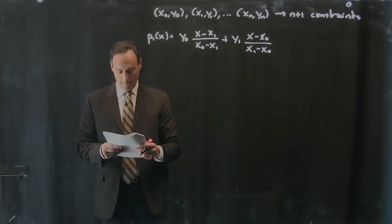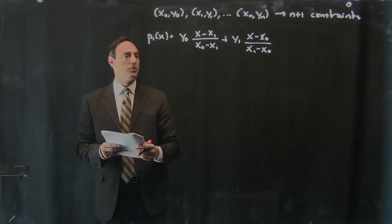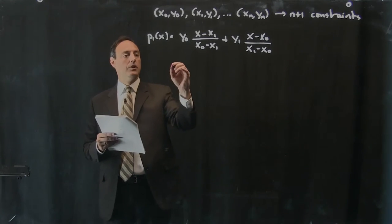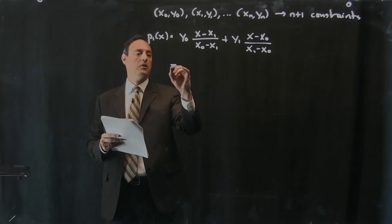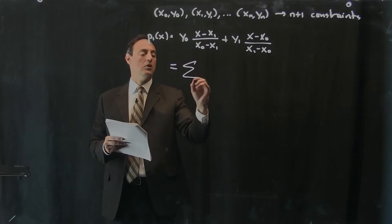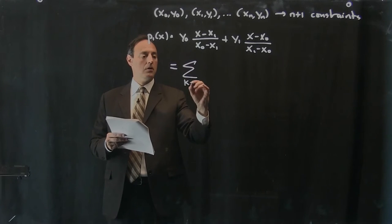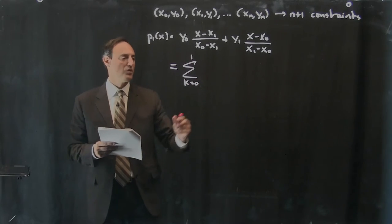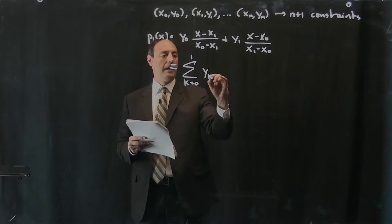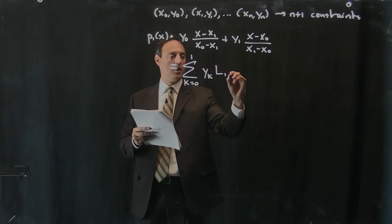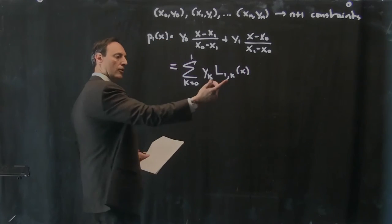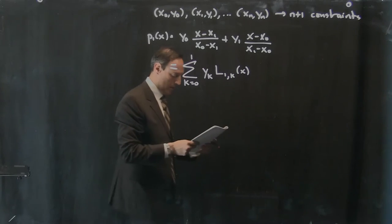The way this is typically represented in practice with these Lagrange coefficient polynomials is the following way. You would instead write this as a sum over two terms from 0 to 1 of y sub k, l sub 1, k, x. These are the Lagrange coefficients, and what do they look like?